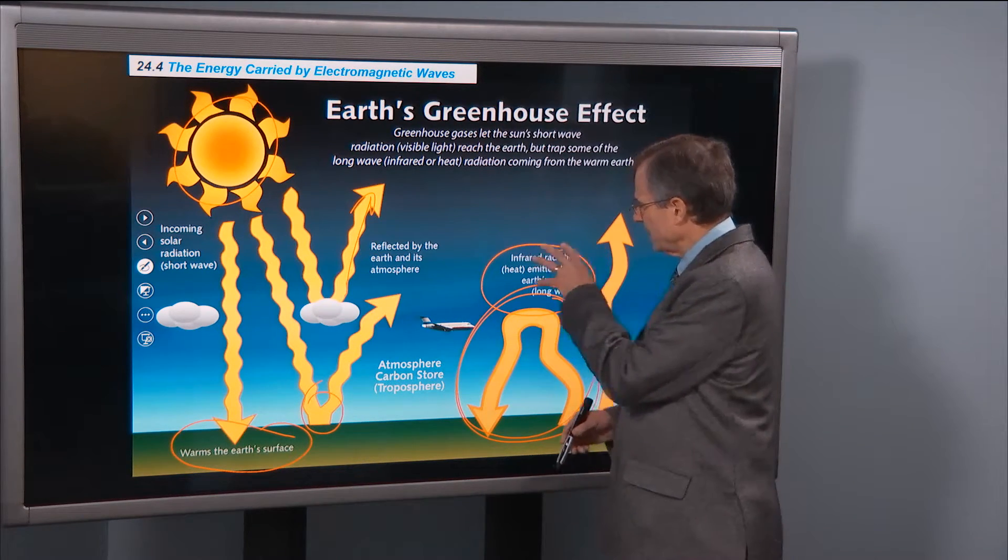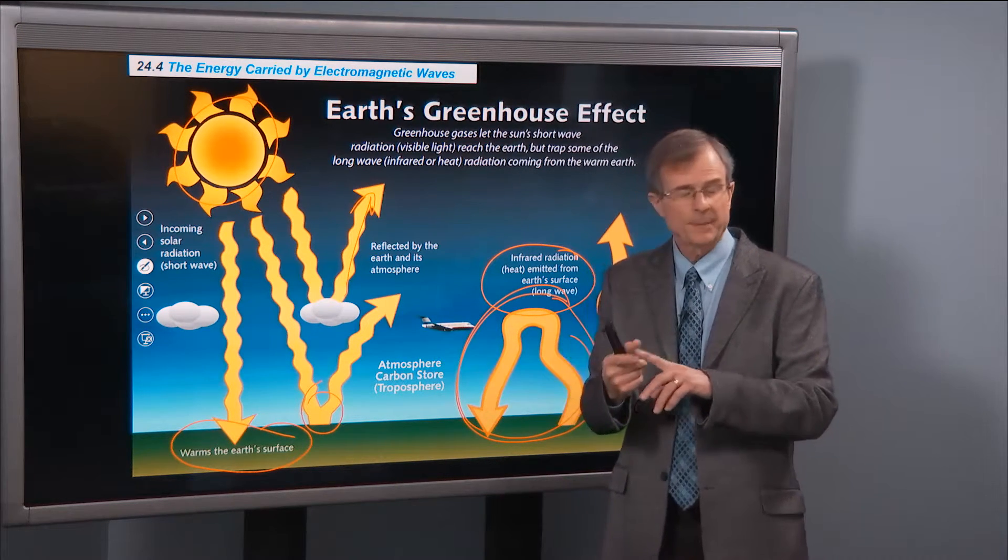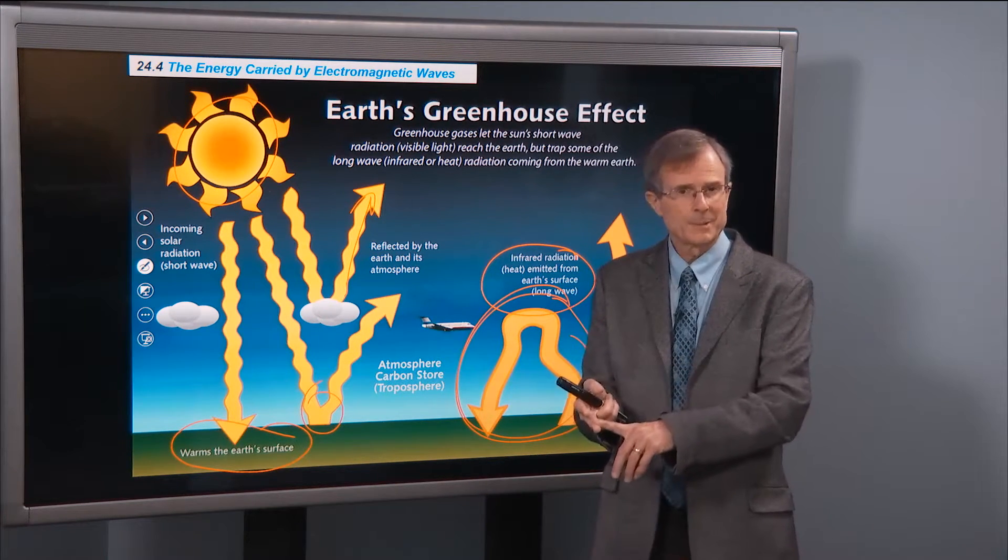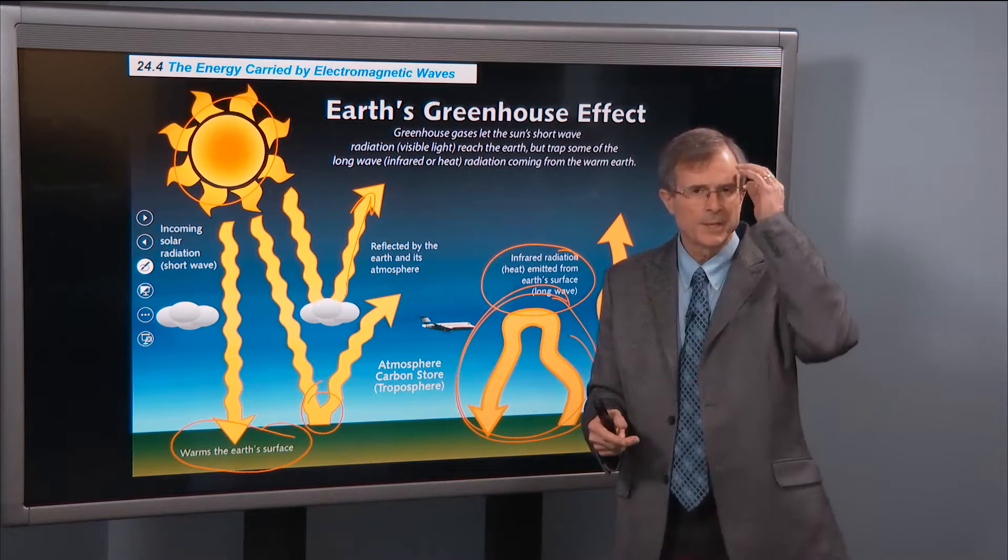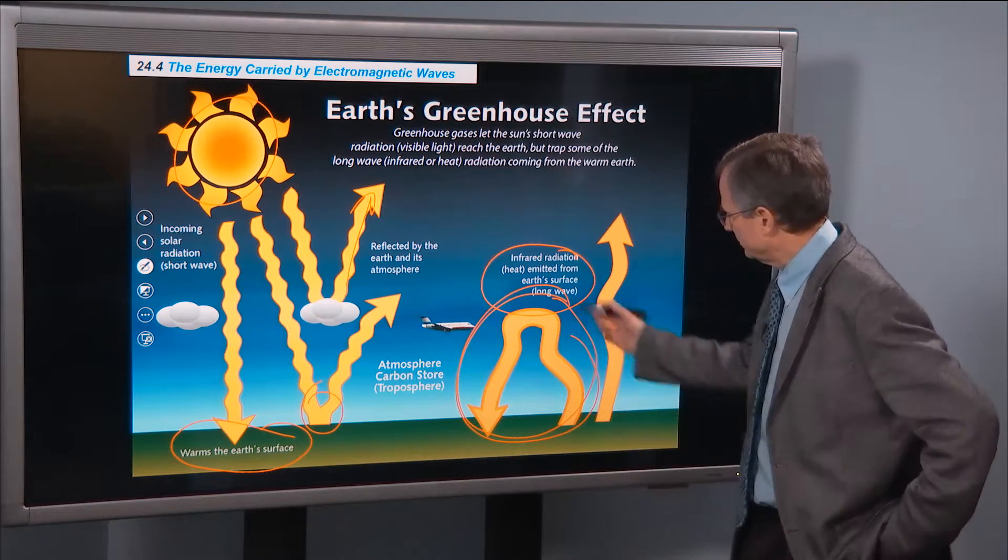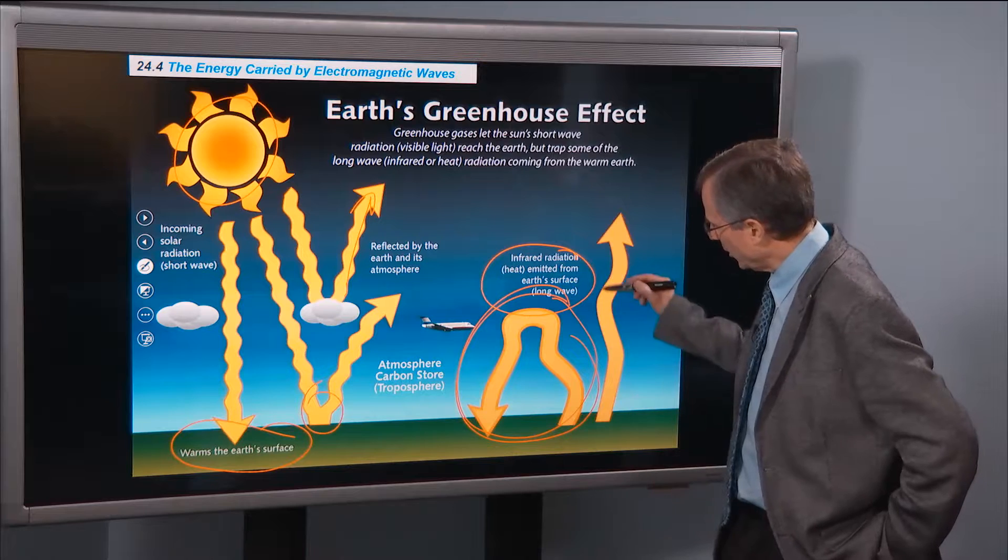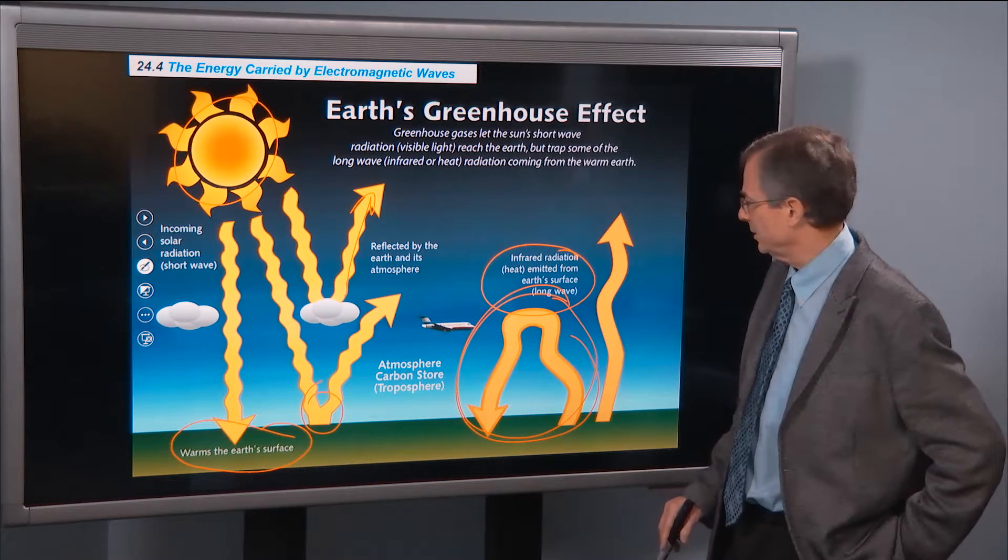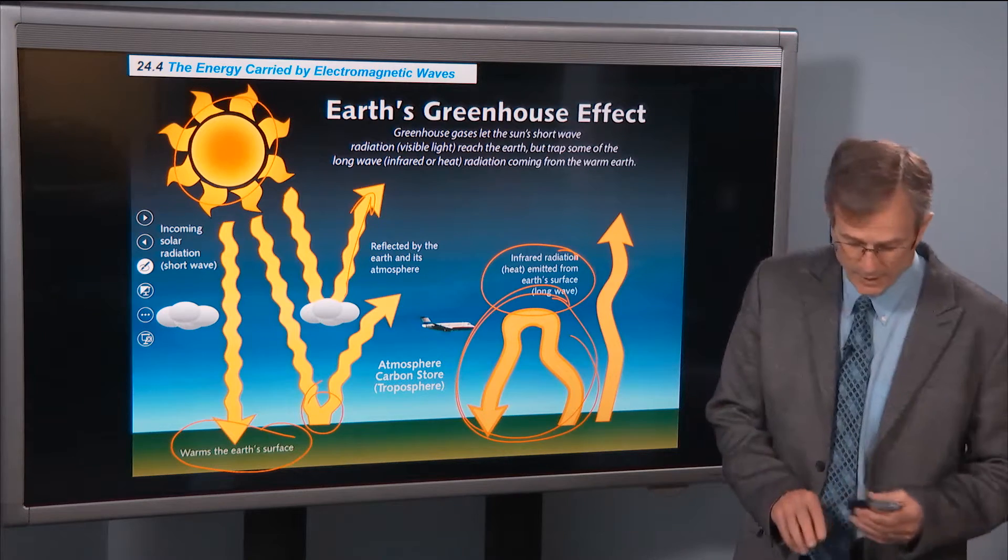and it's the greenhouse gases, water vapor, as well as carbon dioxide, are two examples of greenhouse gases that cause this reflection back to the surface of the Earth. And that's the greenhouse effect.